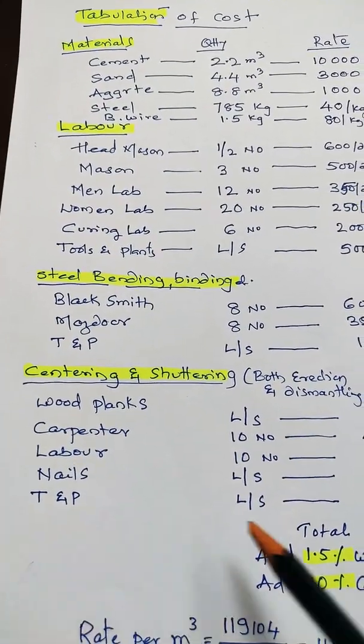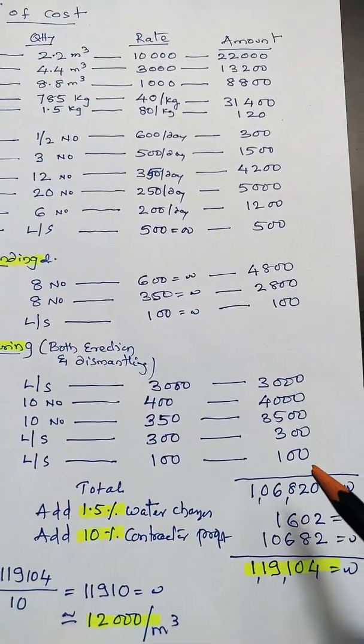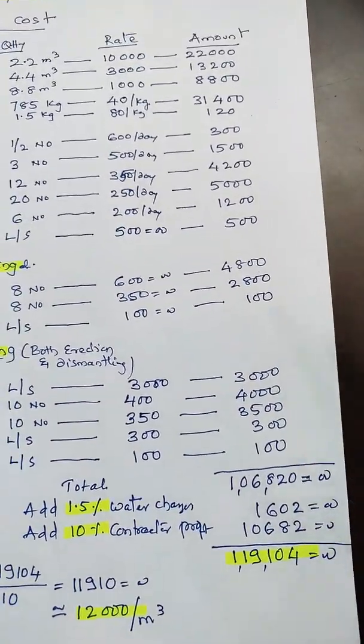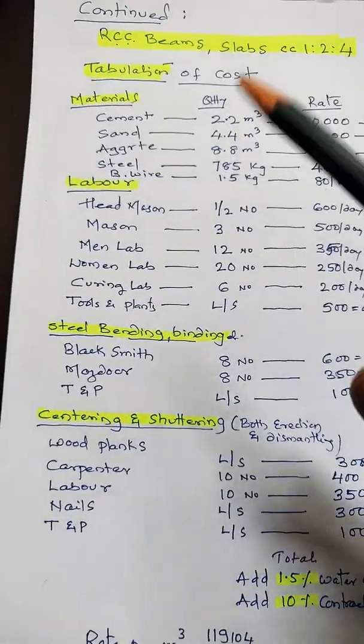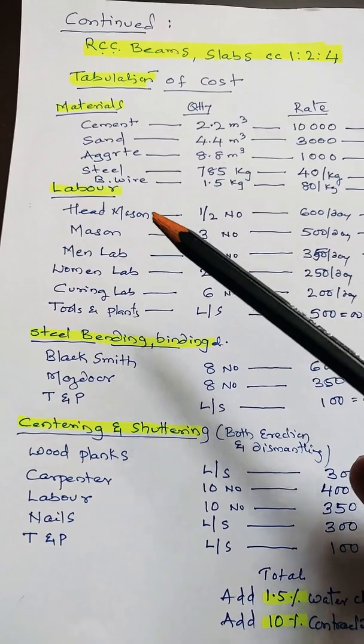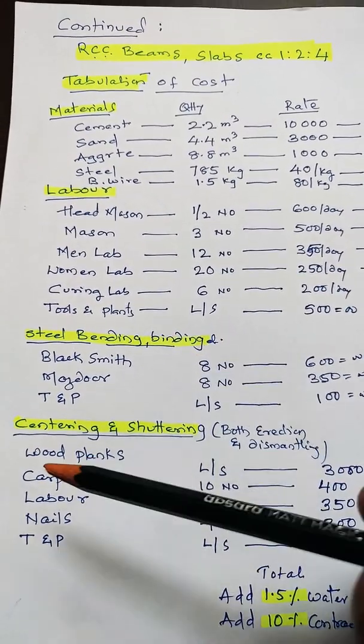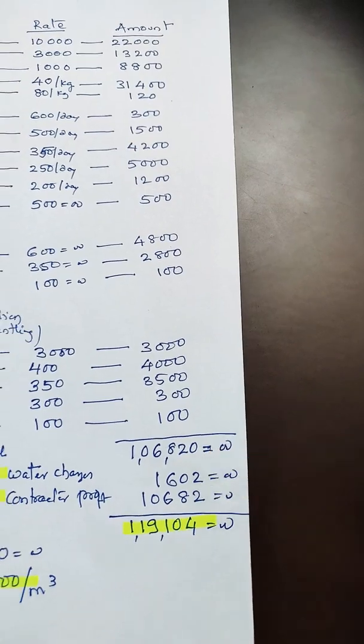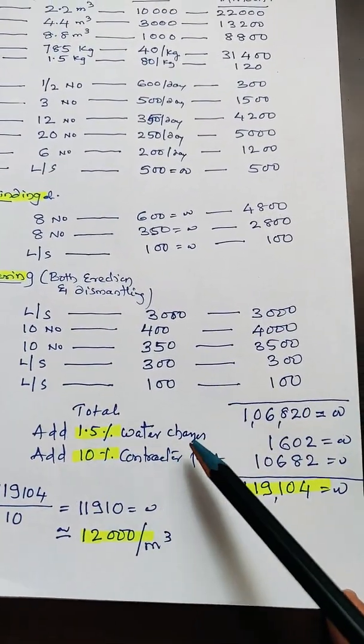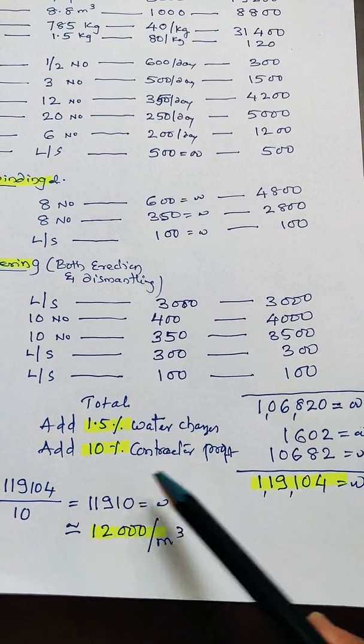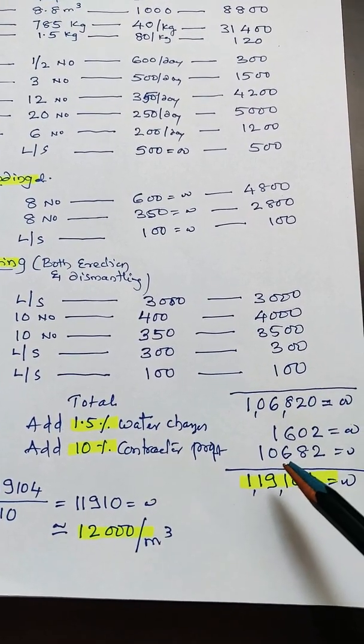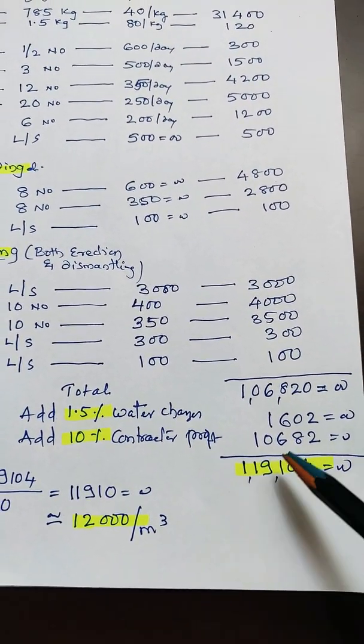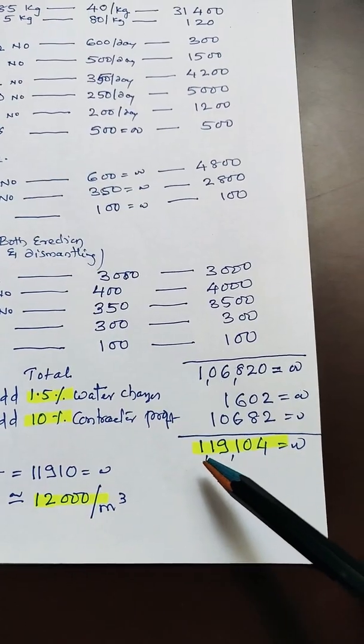Now we'll add all four items: materials, labor, steel bending and binding, then centering and shuttering. It comes out to 116,820. Add 1.5% water charges = 1,750. Add 10% contractor profit = 11,860. Total comes to 119,164.